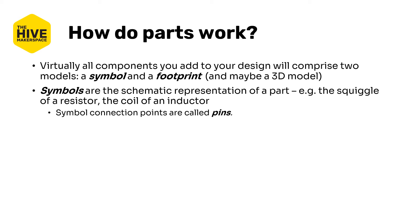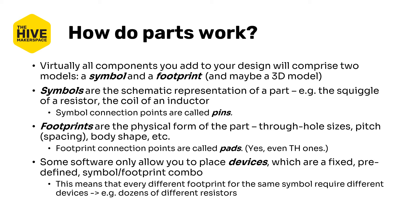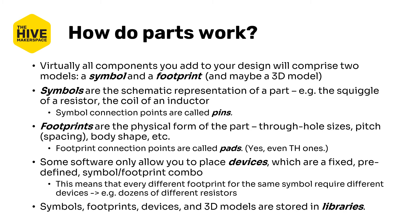Symbols are the schematic representation of a part — think the squiggle of a resistor or the parallel lines of a capacitor — with pins to define the symbolic connection points. Footprints are the physical shape of the device, including the body, through holes, or surface-mounted pads, and are digital representations of the component's package. The connection points for footprints are known as pads, even when they are through holes. Some software requires you to link a symbol and a footprint together into a single combined model called the device, and all of these files are stored in larger collections called libraries.